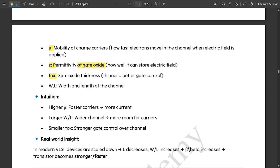Next is TOX. TOX is the gate oxide thickness. Thinner, the thinner the gate oxide, the better the control of the gate terminal. And WL is, as I have already told you, it is the width and length of the channel.